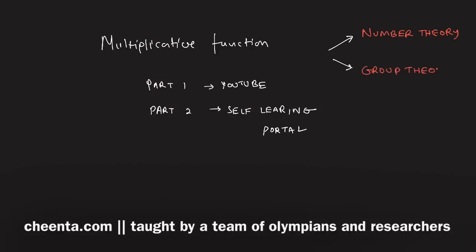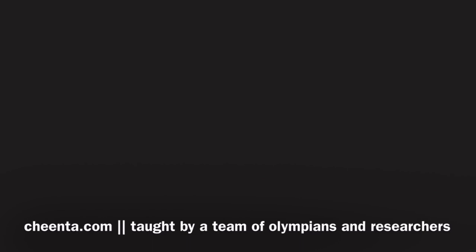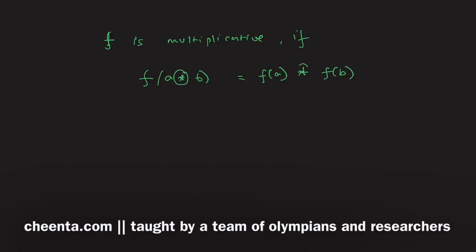The problem we will be working on is from the ISI entrance 2006 — Math Problem Number Two. Before we actually solve the problem, let me quickly say what I mean by a multiplicative function. A function f is multiplicative if f of a★b equals f(a)★f(b), where ★ could be any operation we are interested in.